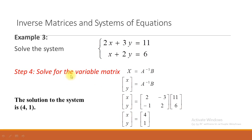To find the solution using x = A⁻¹B: the variable matrix has two variables x and y, the inverse matrix is [2, -3; -1, 2], and matrix B contains the constants 11 and 6. Multiplying these two matrices, we obtain the solution [4; 1]. So the value of x is 4 and the value of y is 1.